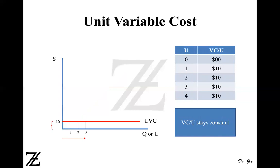Next is the unit variable cost, also known as marginal cost — the marginal cost of producing an additional unit. The unit variable cost stays constant. Variable cost per unit remains constant. For the first unit, the cost of production is $10. For the second unit — just the second unit, not the total variable cost — the variable cost per unit is still $10. For the third unit, it's still $10. So the unit variable cost curve is a horizontal straight line, because it doesn't change.